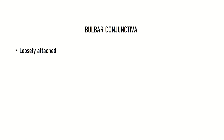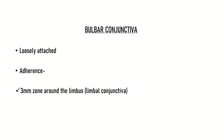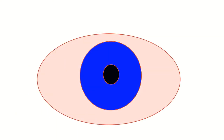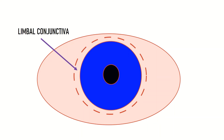Fornicial conjunctiva continues on the surface of the globe as bulbar conjunctiva. It is also loosely attached, except for the 3 mm zone around the limbus, which is known as the limbal conjunctiva. It is also tightly adherent at the insertion of the recti muscles. So the bulbar conjunctiva has two parts: the limbal conjunctiva, present 3 mm around the limbus, which fuses with the corneal epithelium at the limbus; and the rest, known as the scleral conjunctiva.